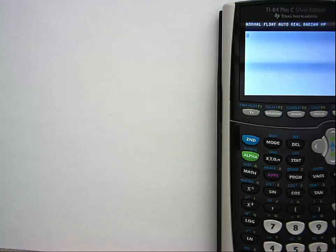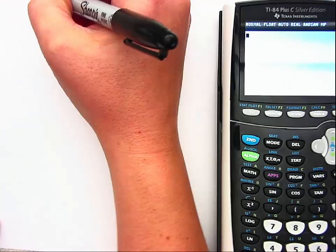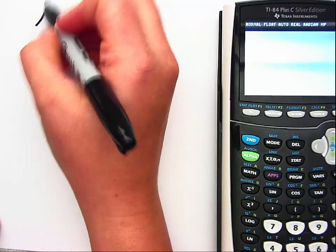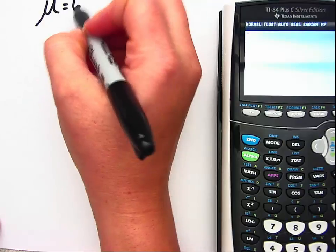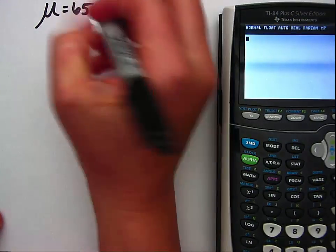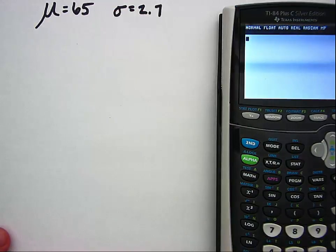So we're still looking at college female heights and we are interested in this group who has a mean of 65 and a standard deviation equal to 2.7.